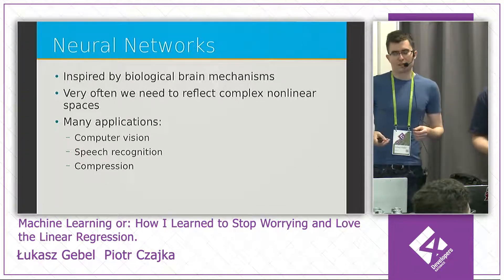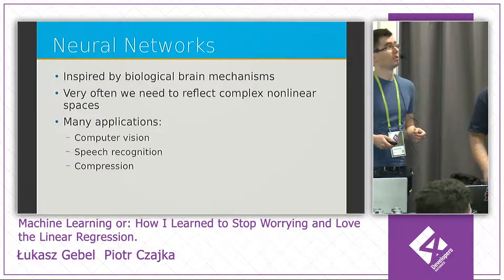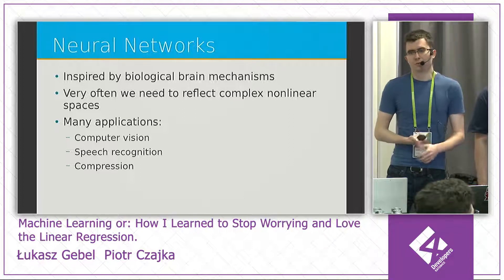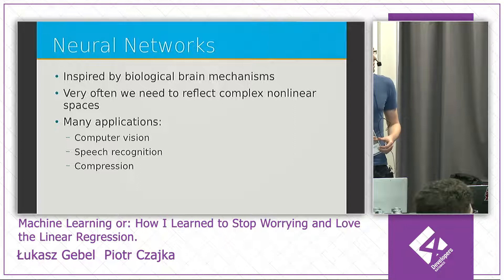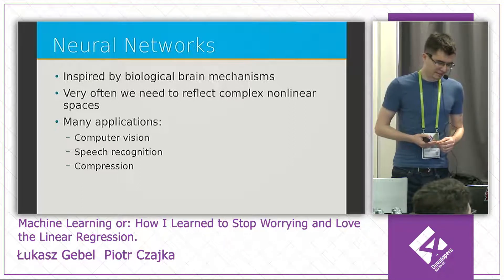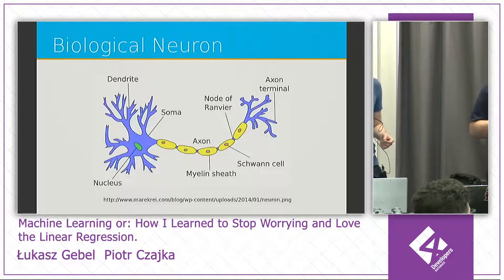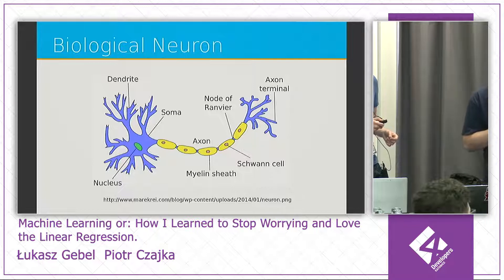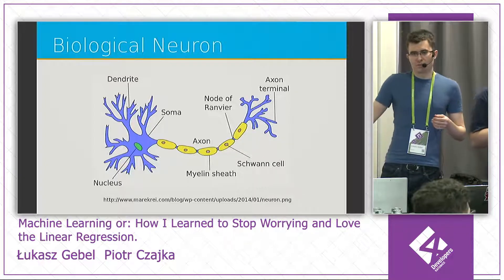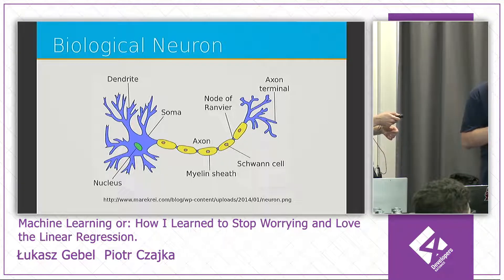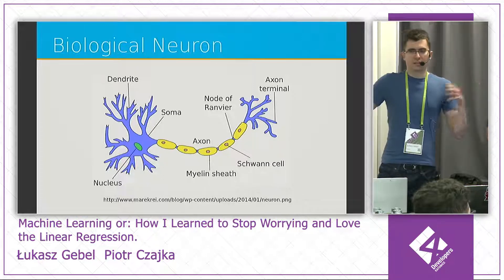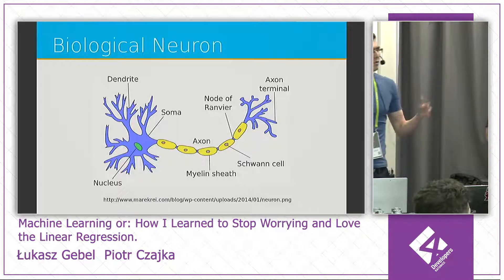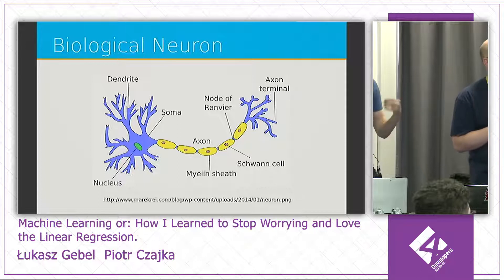One of the most commonly used algorithm families in machine learning is neural networks. They have a huge range of applications, from computer vision to data compression, and can solve complex nonlinear problems. Interestingly, they were inspired by biological mechanisms. Looking at the biological neuron: dendrites receive electrical signals from other neurons, these signals are summed in the cell body, and if the sum exceeds a threshold, the neuron produces an output signal through the axon to other neurons. That's how groups of neurons affect each other — though of course this is a very simplified understanding.